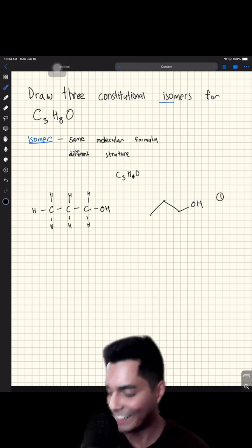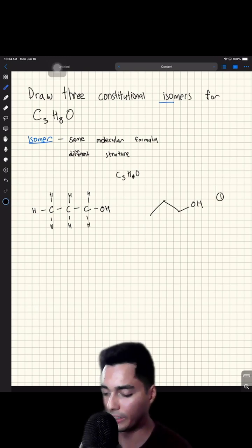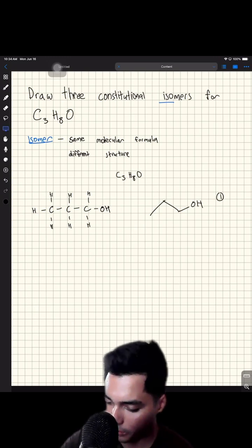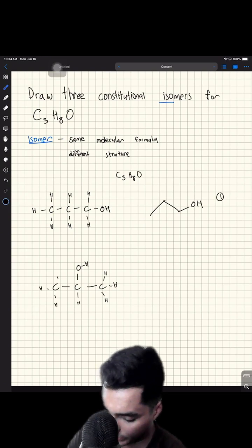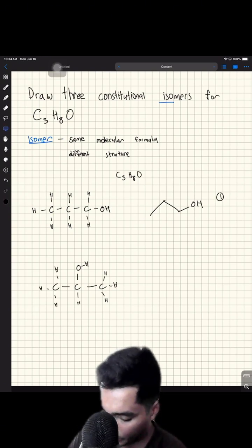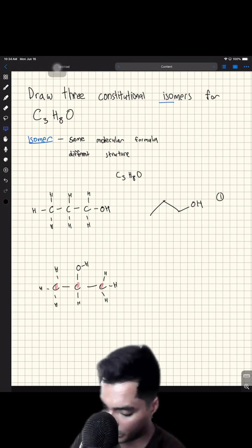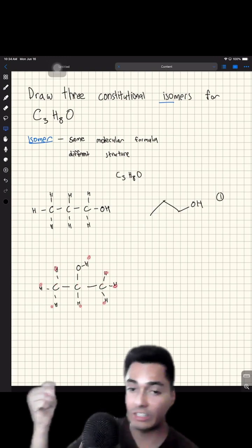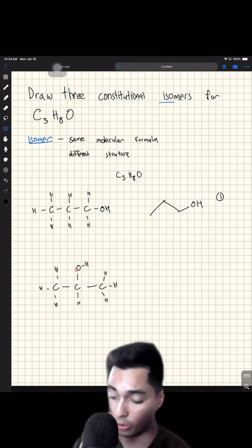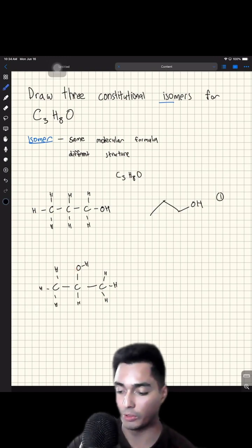Pause here and see if you can get a second constitutional isomer for C3H8O. Suppose what if I move my OH guy to over here? Make sure we count the carbons once again. So once again we're going to have C3: one, two, three carbons. Hydrogens: one, two, three, four, five, six, seven, eight hydrogens, and then the OH right there. So this is indeed another isomer.